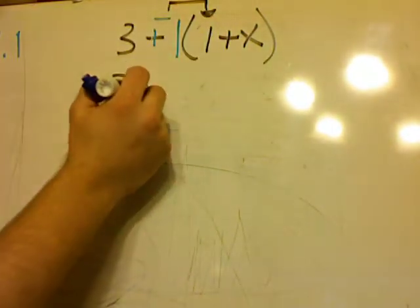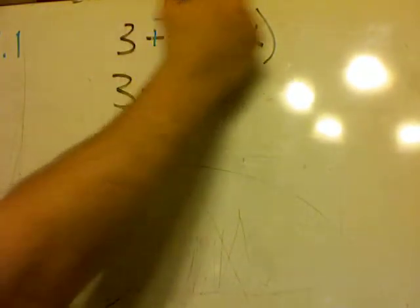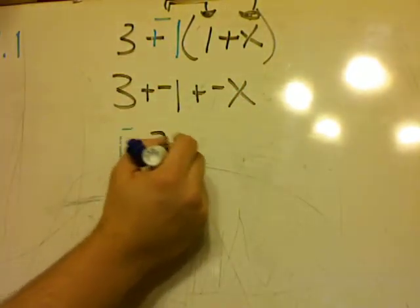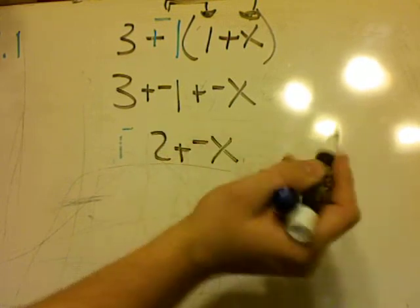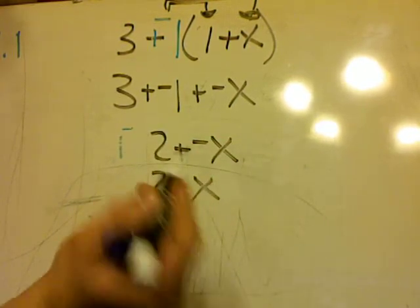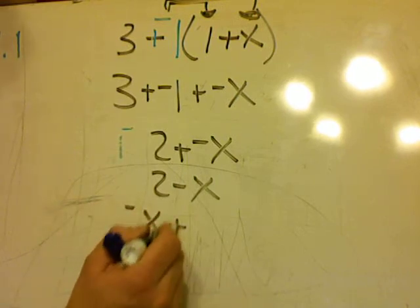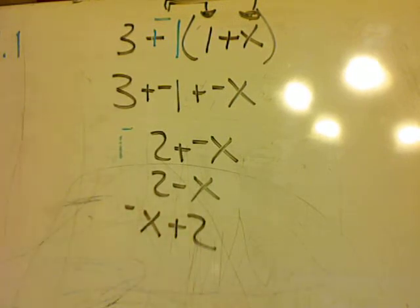So take negative 1 times 1, which would be negative 1. Negative 1 times X would be negative X. Add my like terms to plus negative X. Or I could write 2 minus X. Or I could even write that as negative X plus 2. Okay? Those are all the right answers.